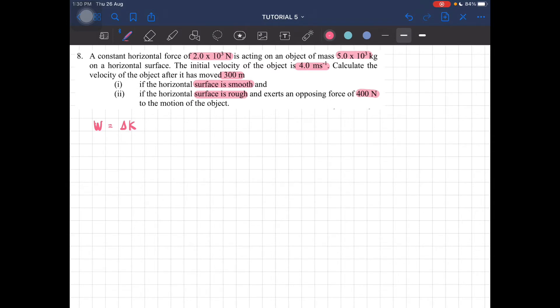When the surface is smooth, we know that work equals F·s·cos(θ) equals K_final minus K_initial. The force present in the first situation is only the horizontal force, which is 2×10³ newtons. S is 300 meters. Since they're parallel to each other, cos(0°) = 1, they're all horizontal. This equals ½mv².